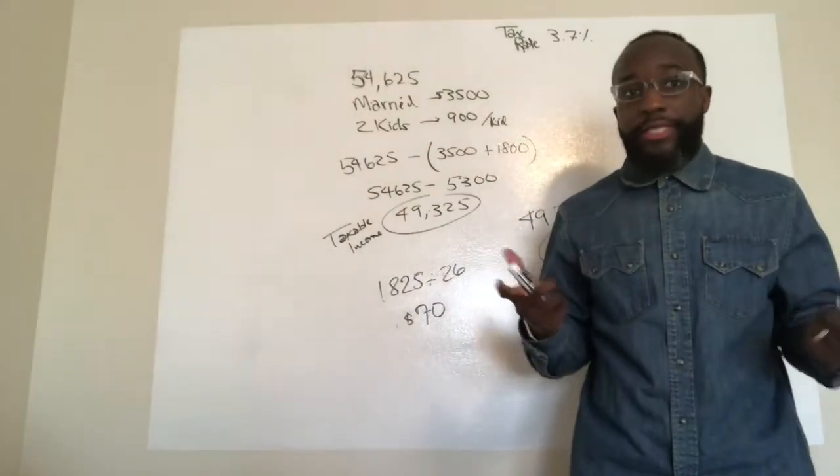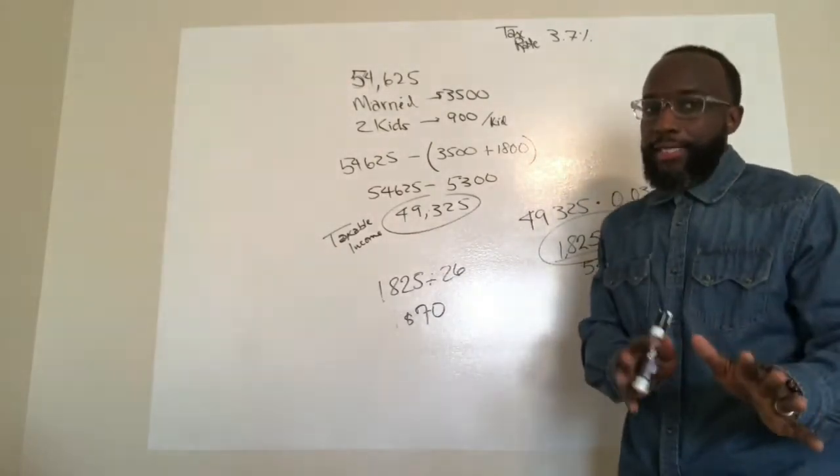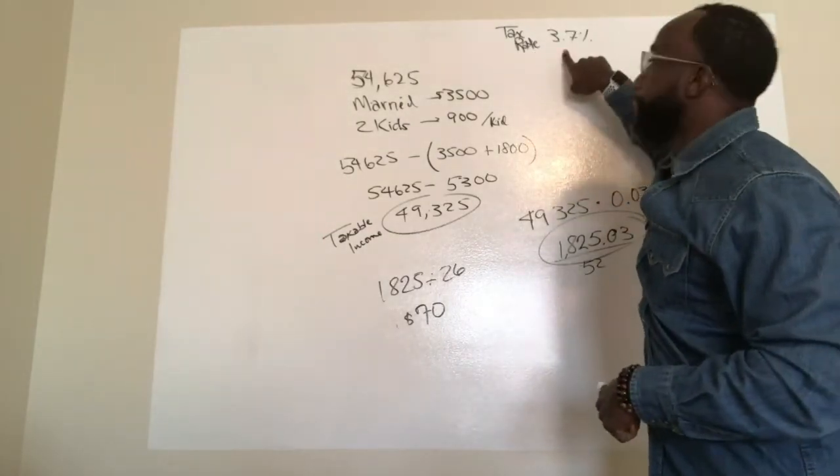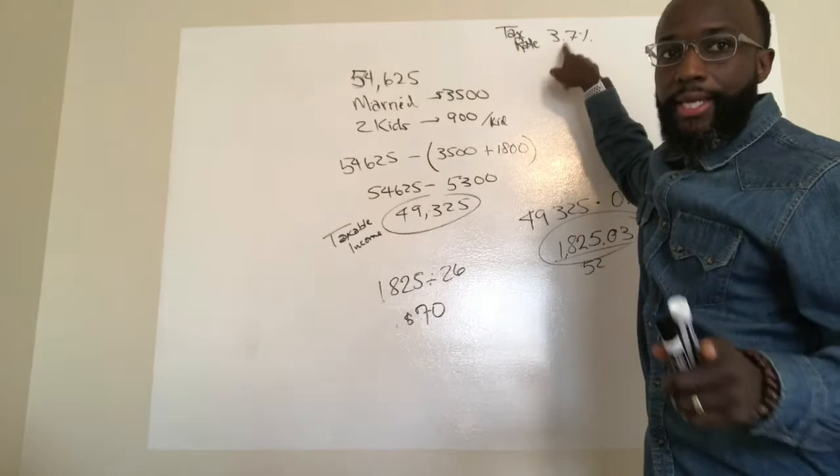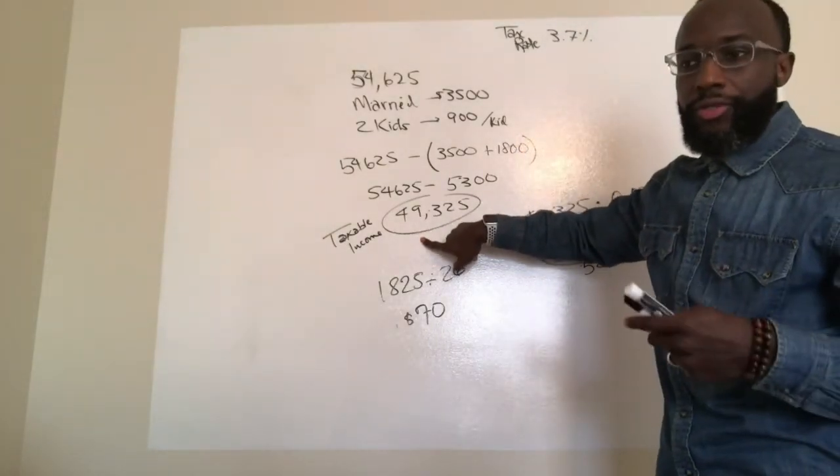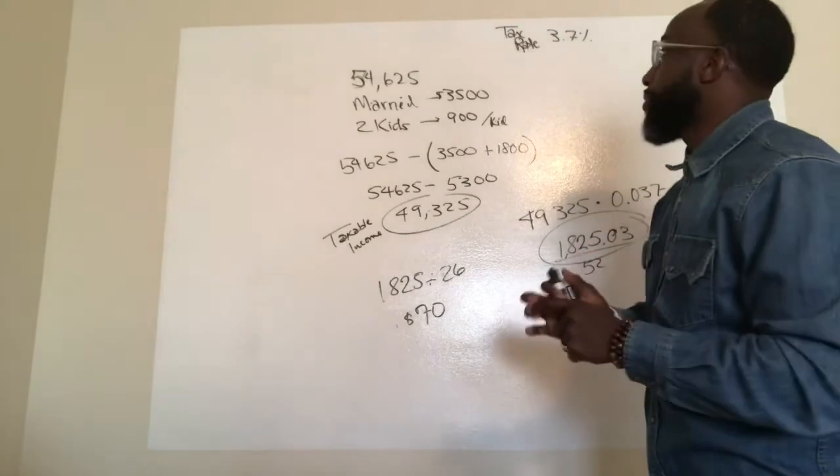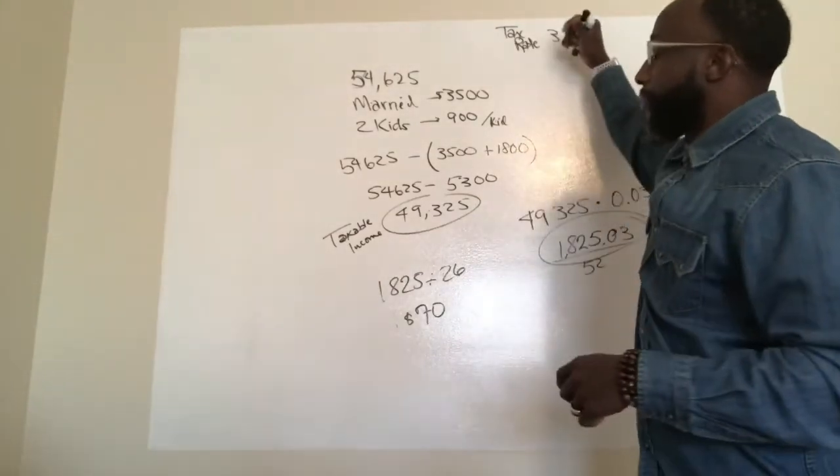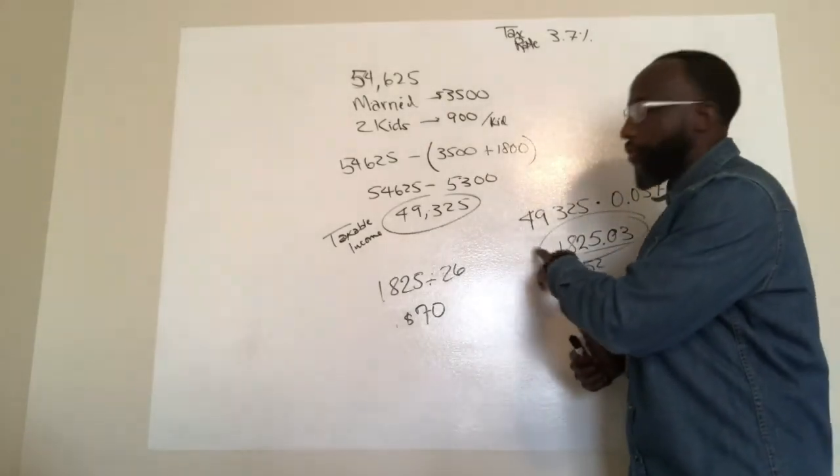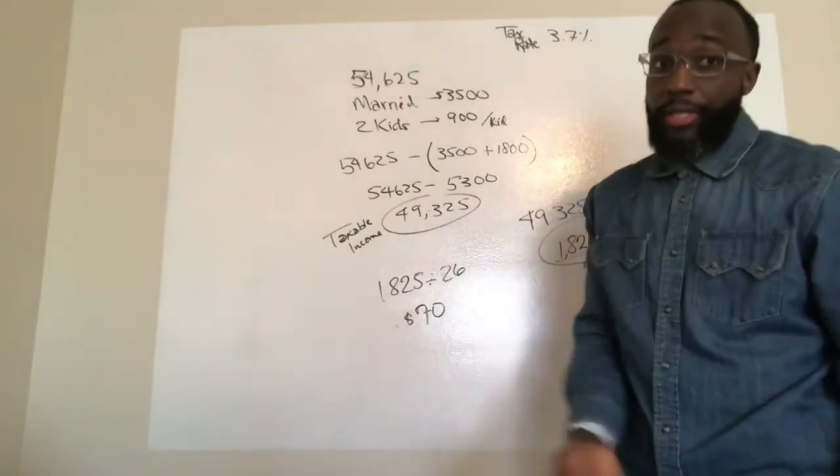So the way state taxes work is, depending on the state, in many states, they give you a flat tax rate. It's a flat tax rate, and that flat tax rate is subtracted from the taxable income to give you your state income tax. And the beautiful thing about it is, many times or most of the times, this amount, this amount here is accurate enough to, at the end of the year when it's time to file your taxes, you don't owe anything. In fact, they owe you.